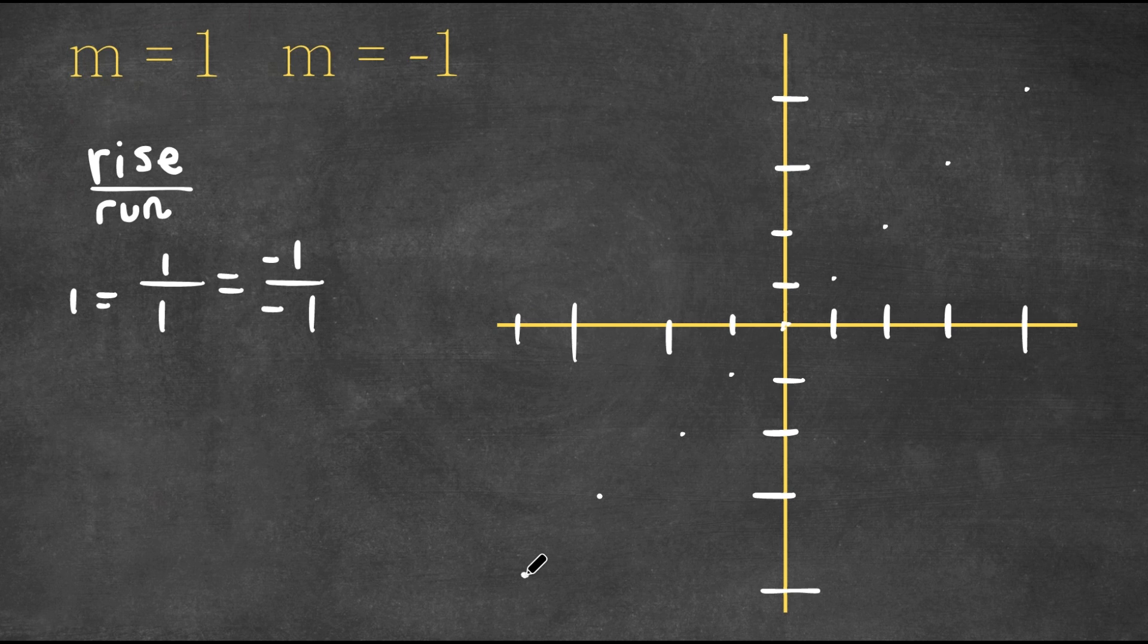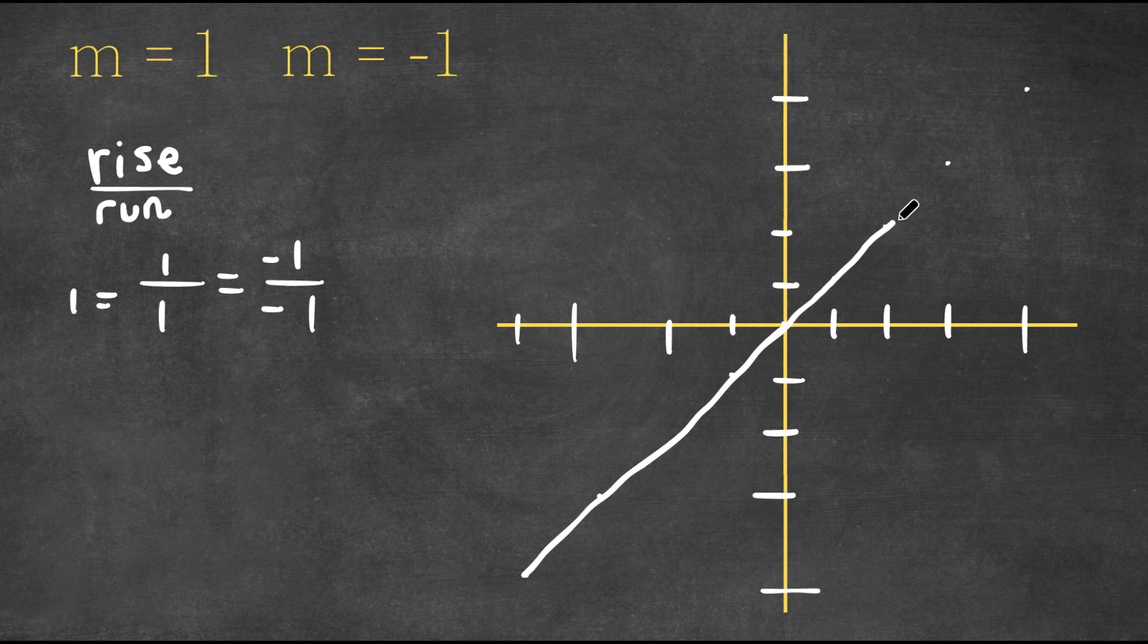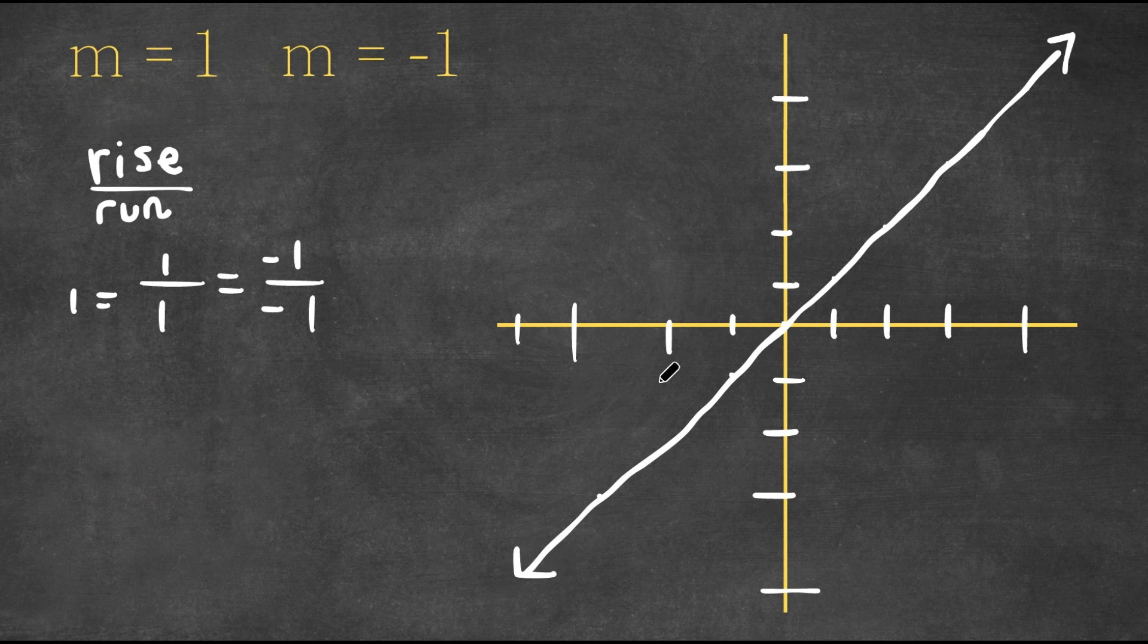And keep on doing this until there's no space left in our graph. So now as you see, if I connect all these points, we have a line. So with the slope, you can graph a line.